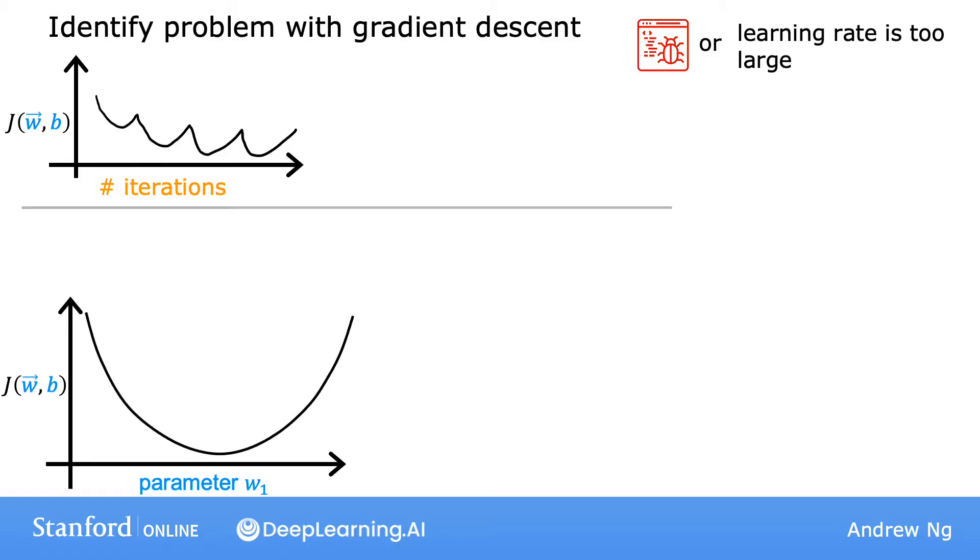Here's an illustration of what might be happening. The vertical axis is the cost function j, and the horizontal axis represents a parameter like maybe w1. If the learning rate is too big, then if you start off here, your update step may overshoot the minimum and end up here. And in the next update step, you're again overshooting, so you end up here, and so on. That's why the cost can sometimes go up instead of decreasing.